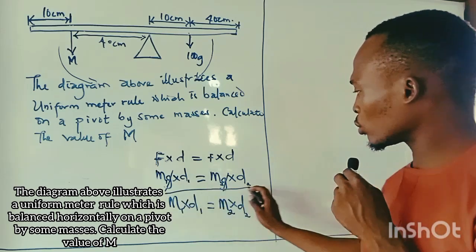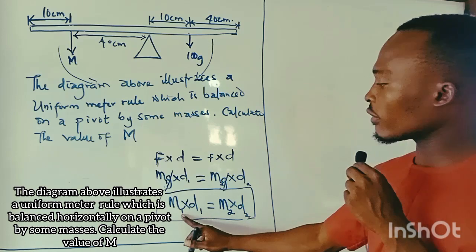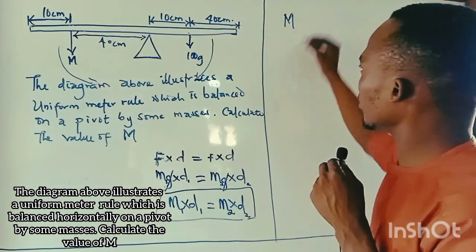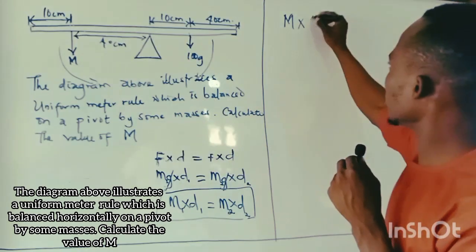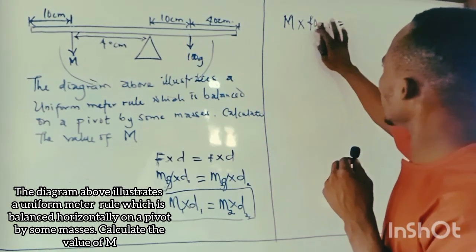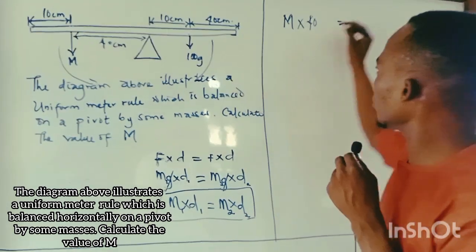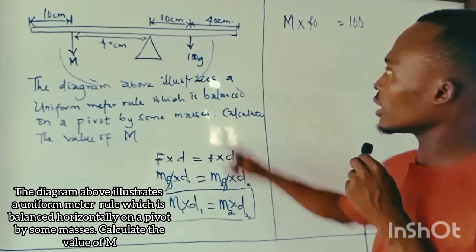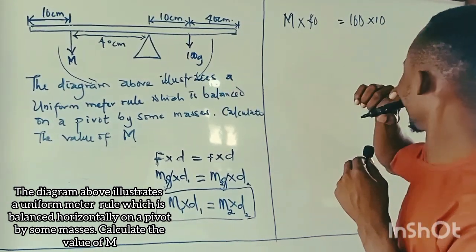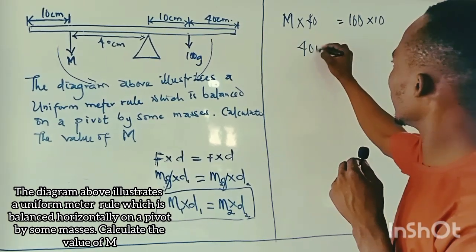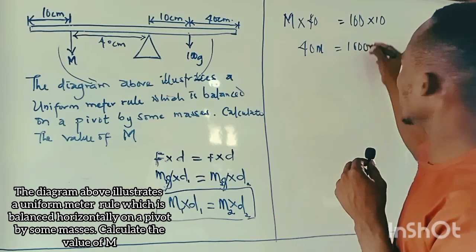Since gravity has cancelled, we substitute values. The mass of the first object is the unknown M, times its distance of 40 cm, equals the mass of the second object, which is 100 grams, times the distance it makes with the pivot, which is 10 cm. So we have: 40M = 100 × 10 = 1000.